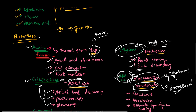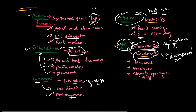Abscisic acid plays vital functions in senescence — it promotes senescence of the plant. It also plays an important role in abscission. Another major function of abscisic acid is regulating stomatal opening and closing by controlling the efflux of potassium ions into the stomata.